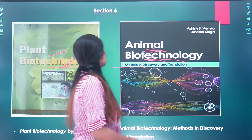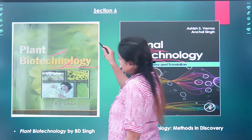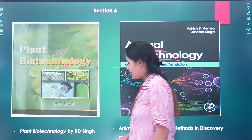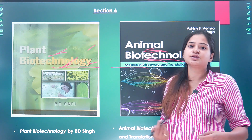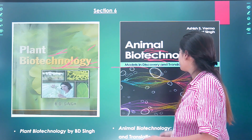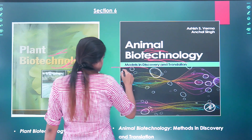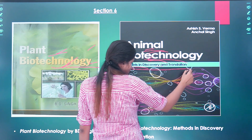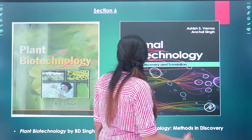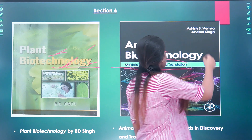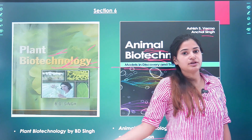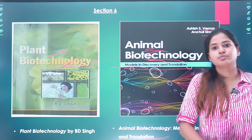For plant biotechnology, I would refer to BD Singh and also 'Plant Biotechnology' by HS Chawla. For animal biotechnology, there is 'Animal Biotechnology: Models in Discovery and Translation' by Ashish S. Verma and Achal Singh. Both books are really necessary for your plant and animal biotechnology preparation.